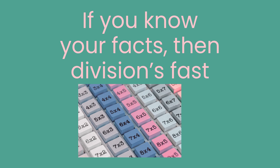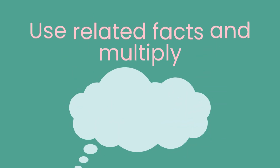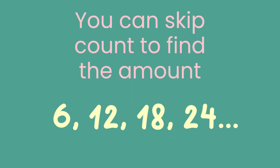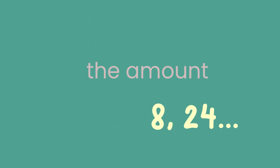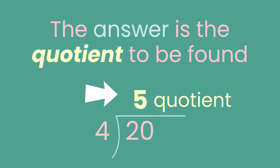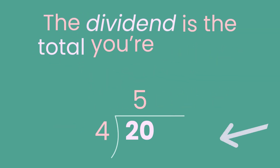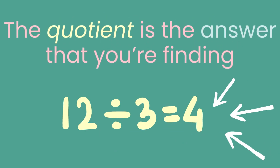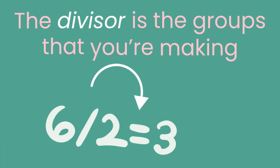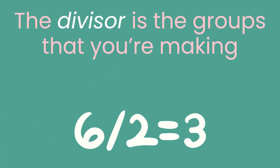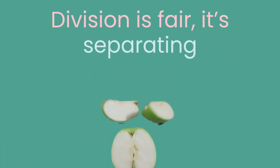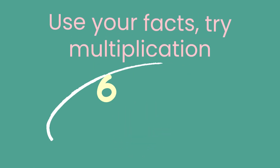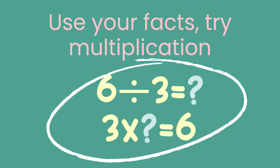If you know your facts, then division's fast. Use related facts and multiply. You can skip count a funny amount — the answer is the quotient to be found. The dividend is the total you're dividing, the quotient is the answer that you're finding, the divisor is the groups that you're making. Division is fair and separated — take your time with no hesitation. Use your facts, try multiplication.